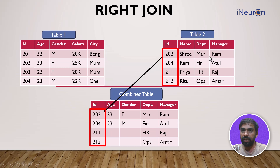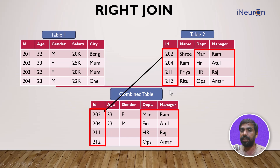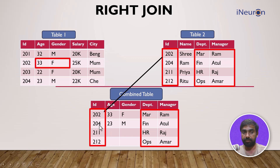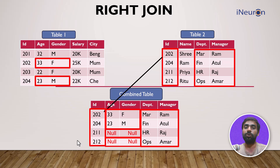All the rows of table two — 202, 204, 211, and 212 — are taken since it's a right join. For this table, all department manager data is present for all four rows, so it comes through automatically. However, for age and gender, only 202 and 204 are the common rows, so only their age and gender are reflected. For 211 and 212, age and gender are not present and will show as null values.